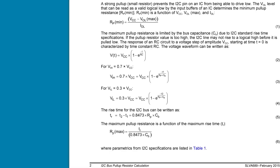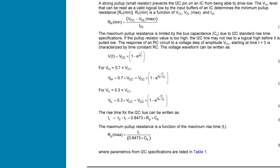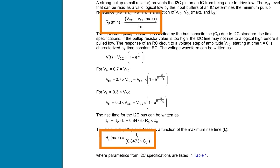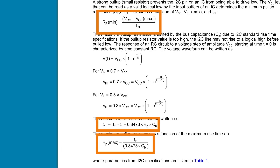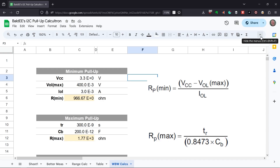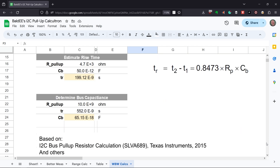This TI application note shows the equations we need. It has the minimum and maximum resistor values and how to calculate the expected rise time. It also summarizes the math behind them. Using those equations, I created a spreadsheet that adds calculating bus capacitance, but more on that later. I found multiple app notes from multiple vendors with the same basic information. This app note from the former Philips Semiconductor has some I2C-specific numbers that we need.